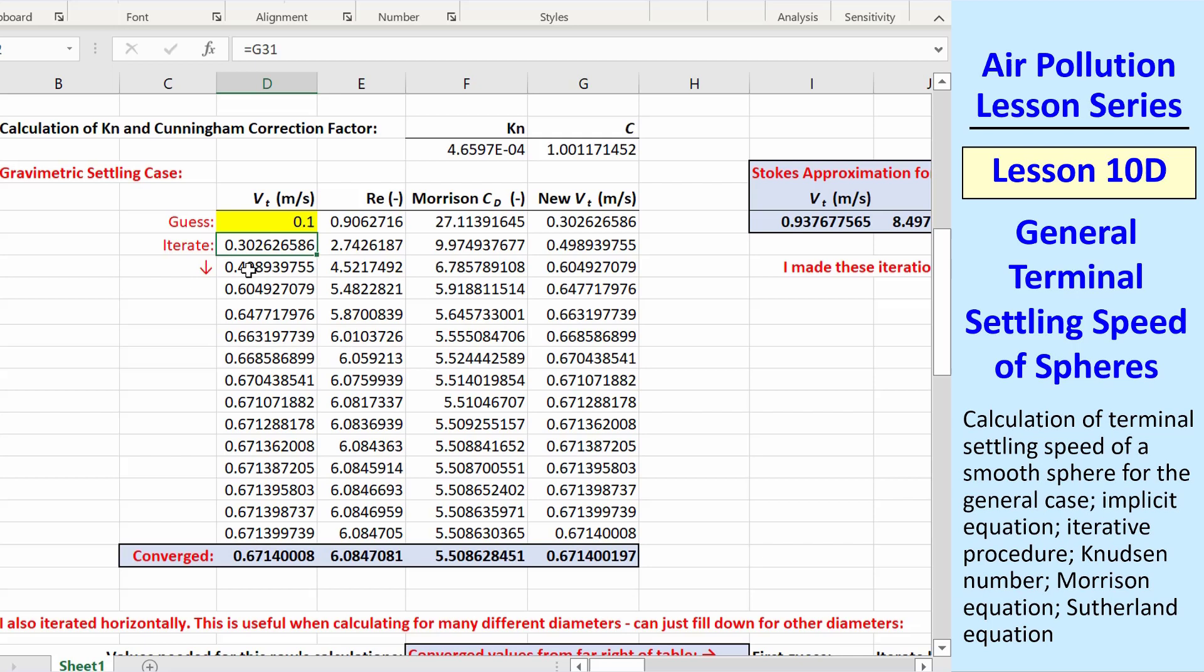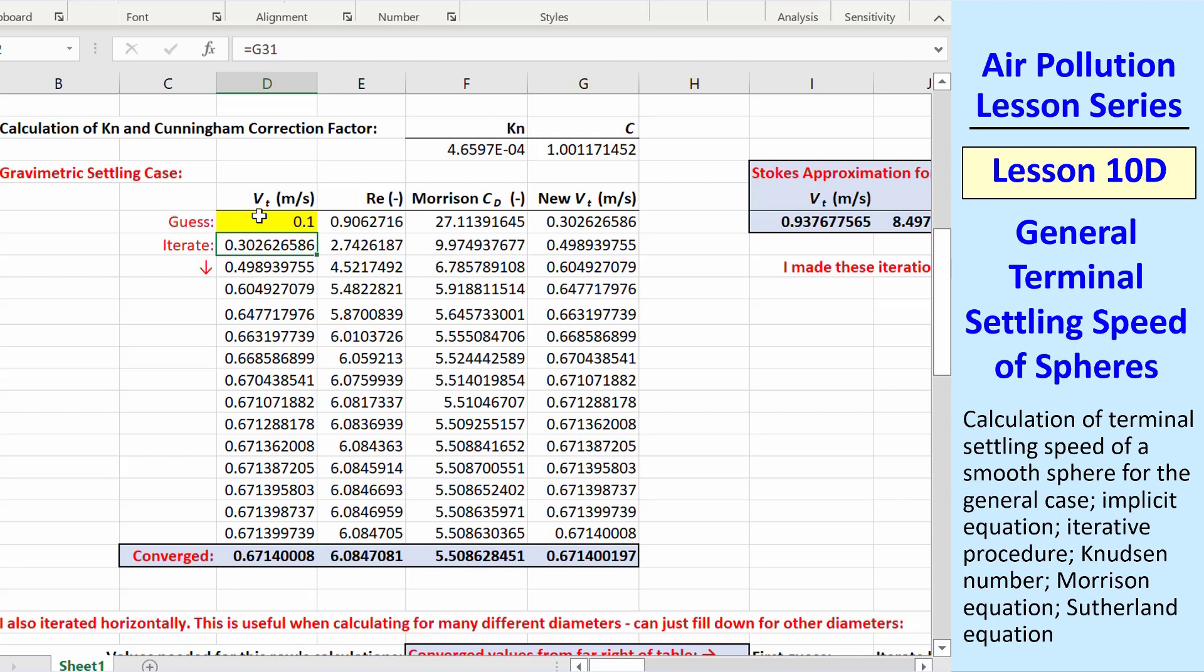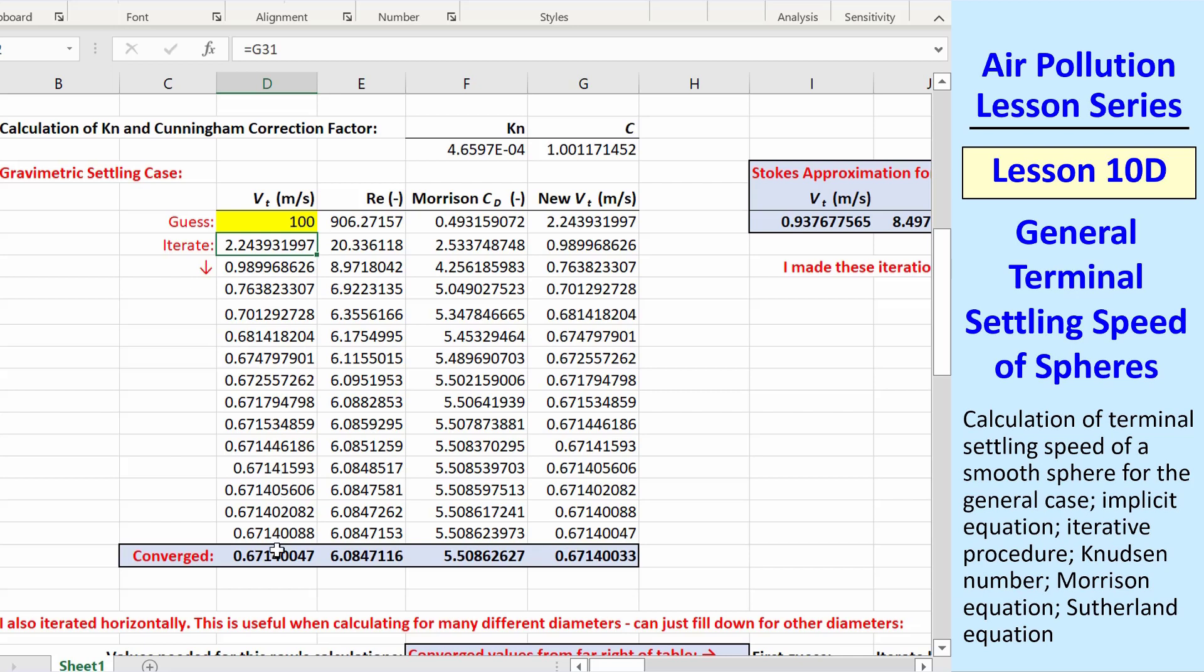0.1. In all cases, it converges to the same value, even if I have a really bad guess, like 100 meters per second. It may take a little longer, but it still converges.